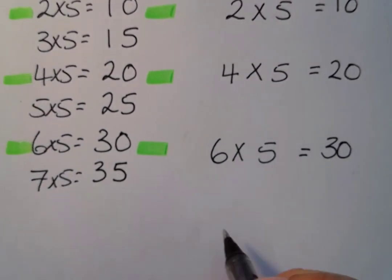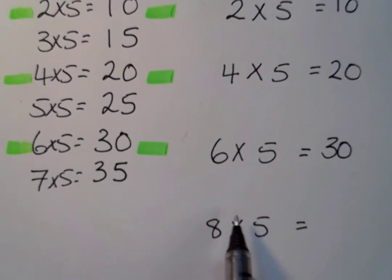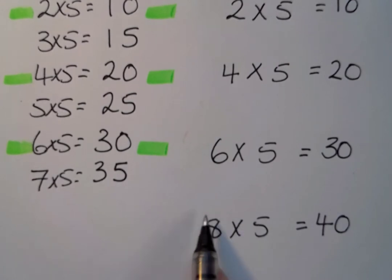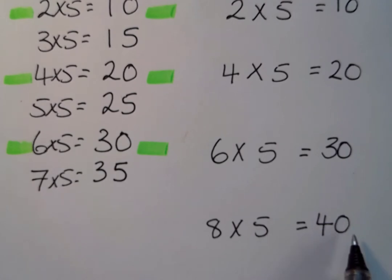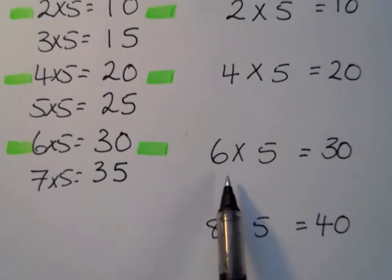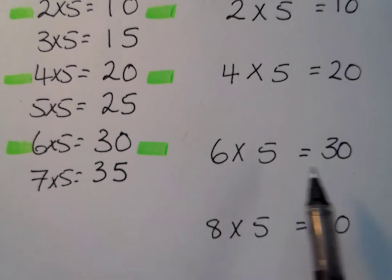What is eight times five? We can think: eight times ten is eighty, what's half of eighty? The answer is forty. Or: what's half of eight? Half of eight is four, so the answer has a four in the tens digit and a zero at the end — forty. The even numbers are straightforward: it's half of ten times that number, so half of sixty is thirty.